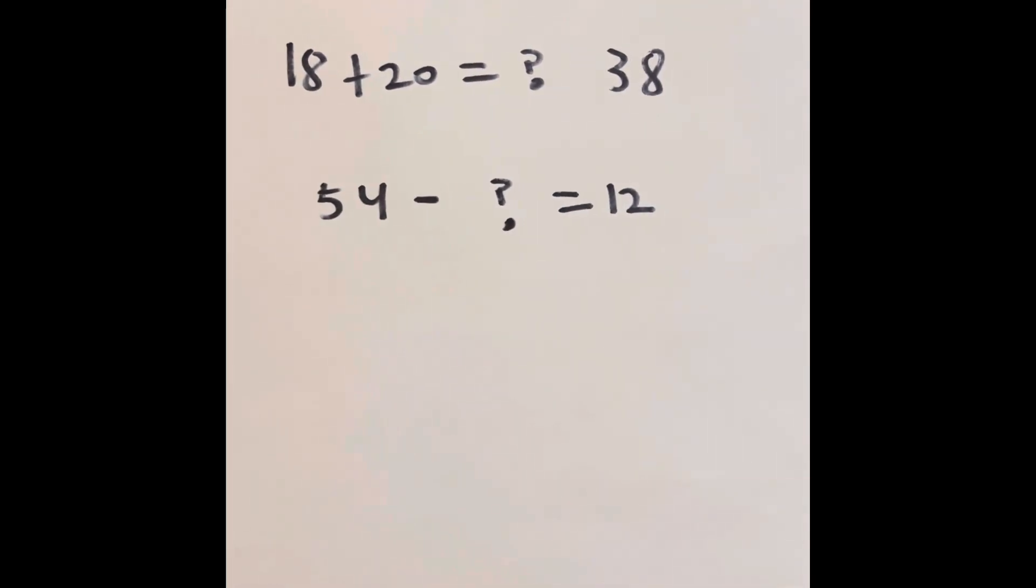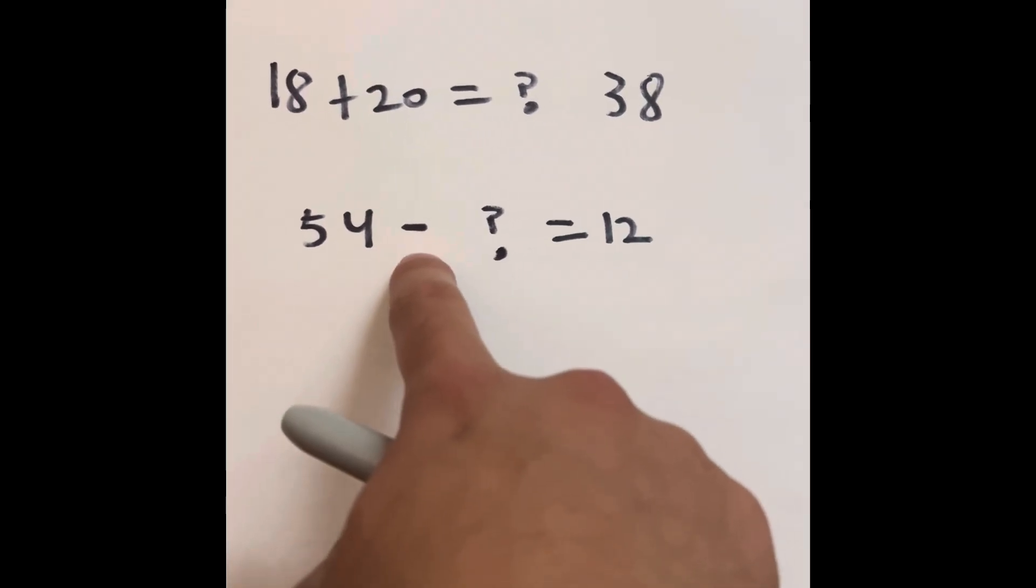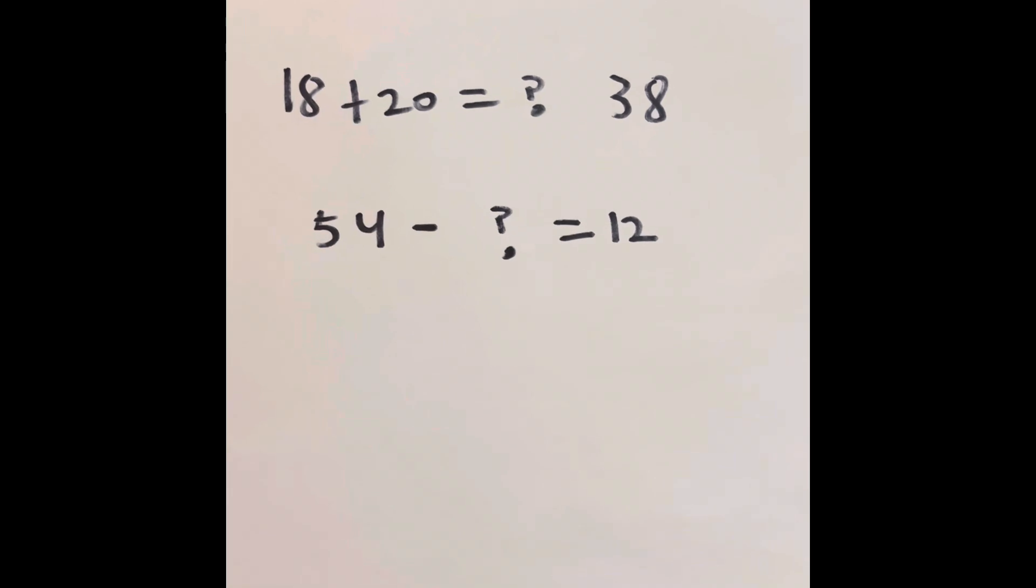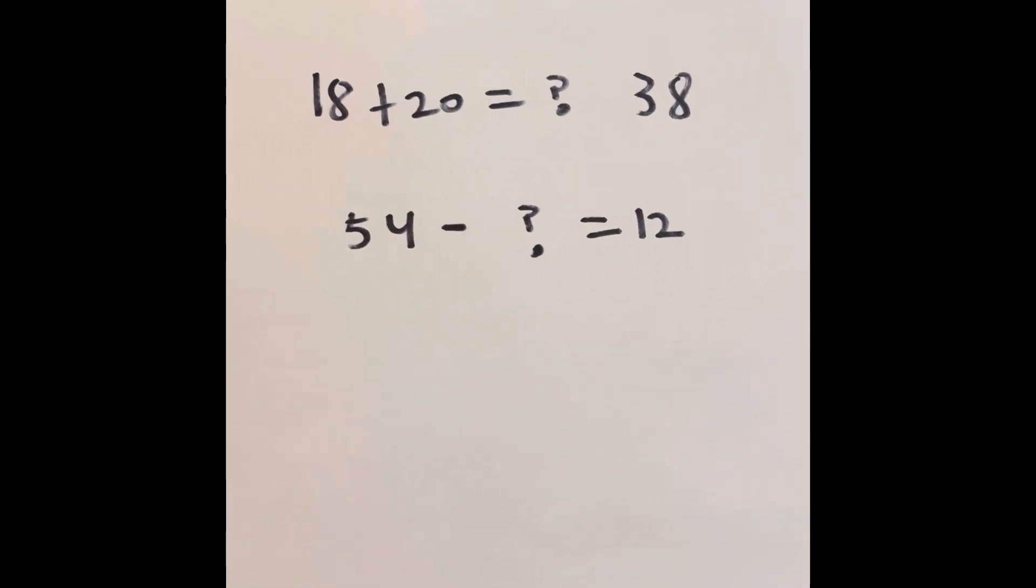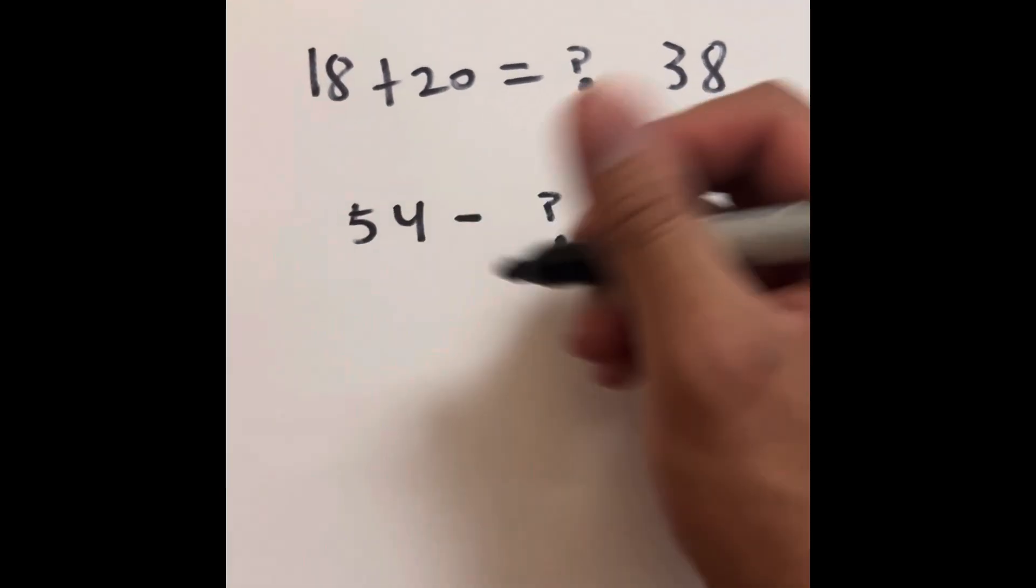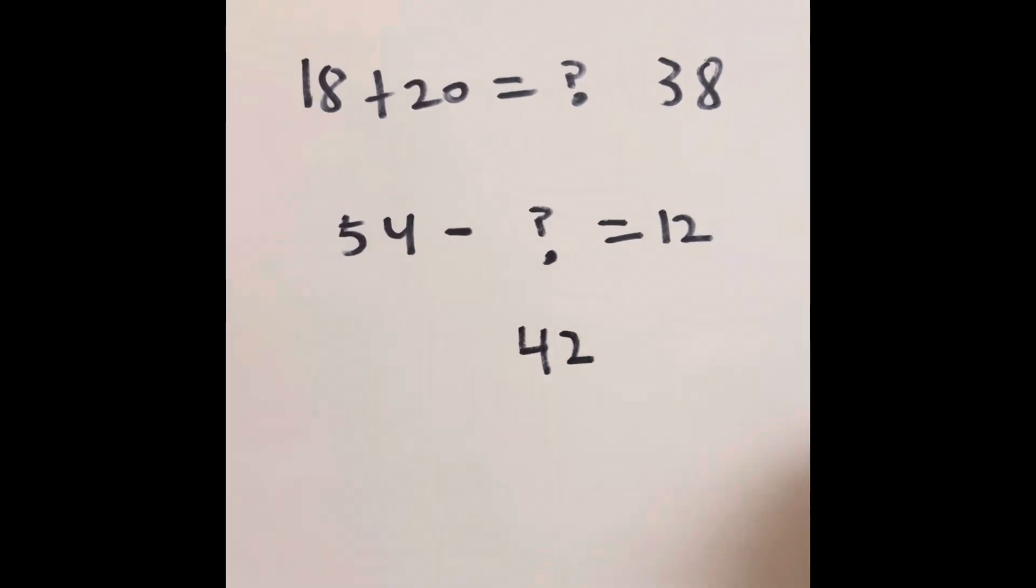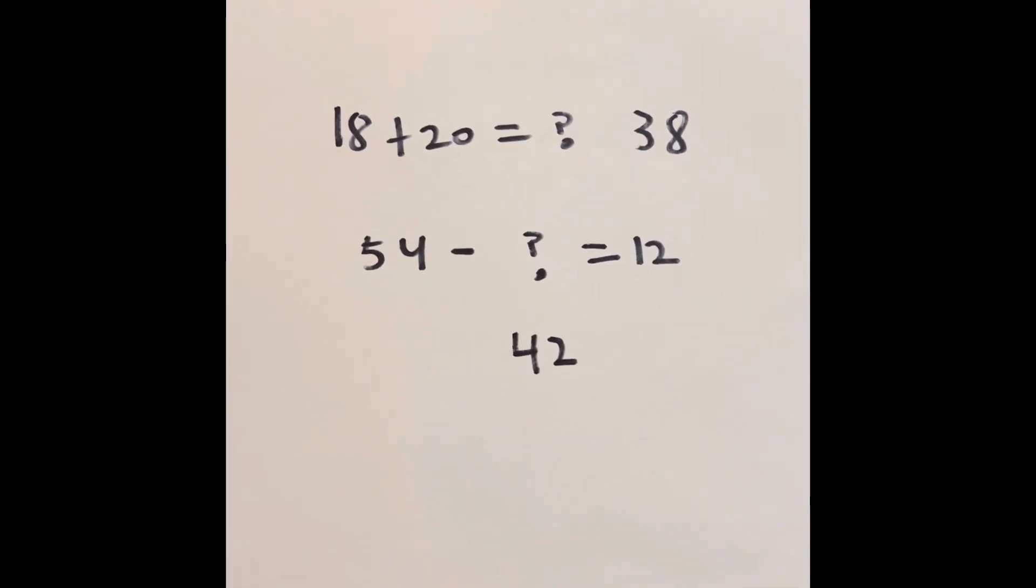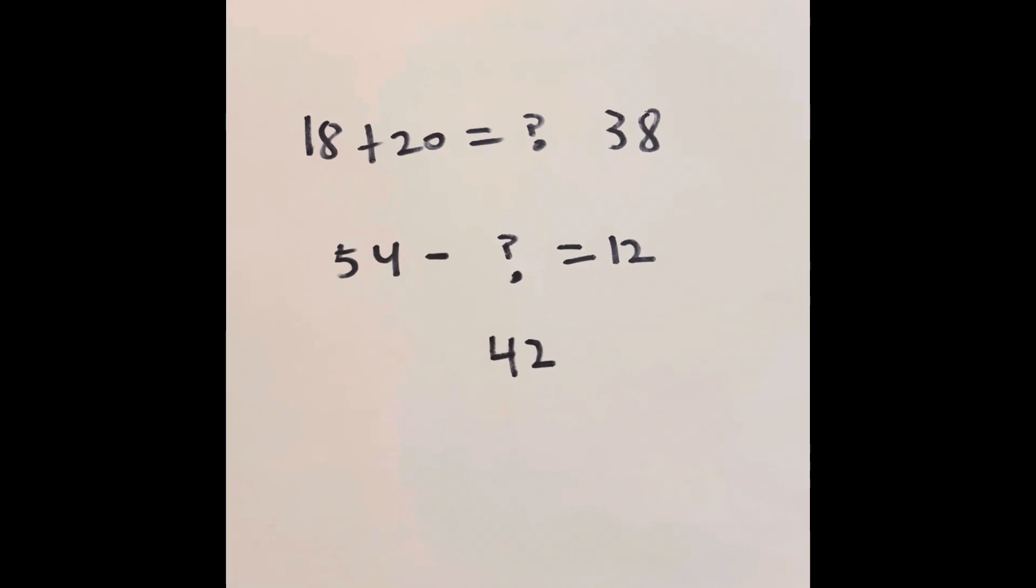We can say 54 subtracted by what mystery number gets us to 12. We could say 54 minus 42 equals 12. That's pretty much the basic math we learned in elementary school.